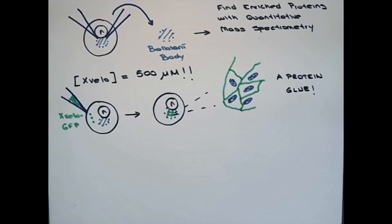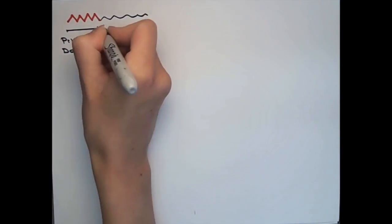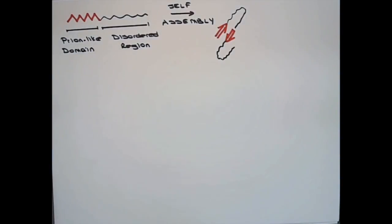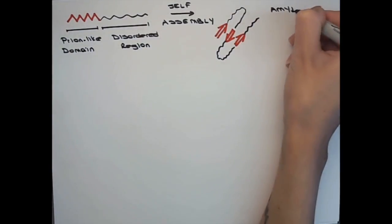How does Xfelo form the stable glue for the organelles? Xfelo is a disordered protein with a prion-like domain on one end. Such prion-like domains can promote self-assembly of proteins into stable structures, called amyloids.